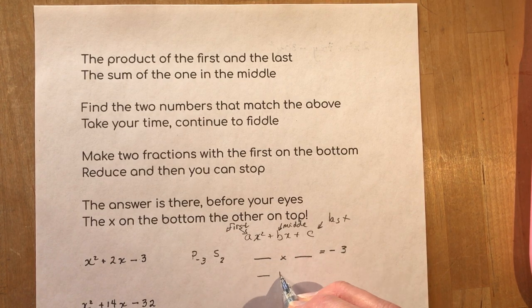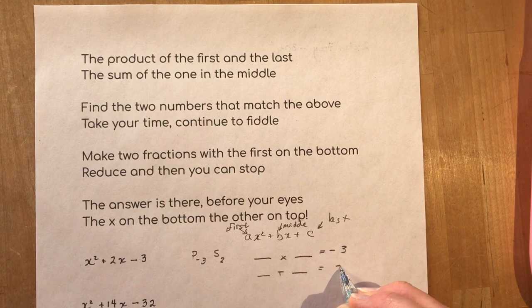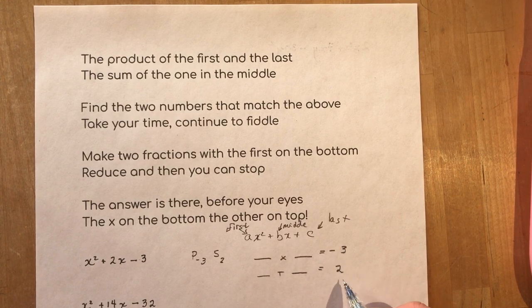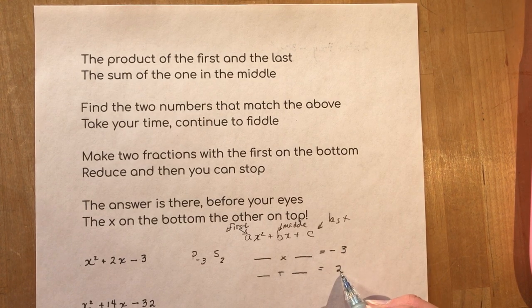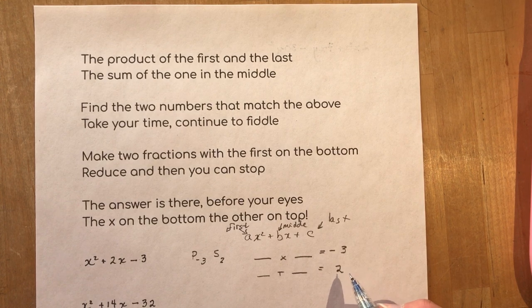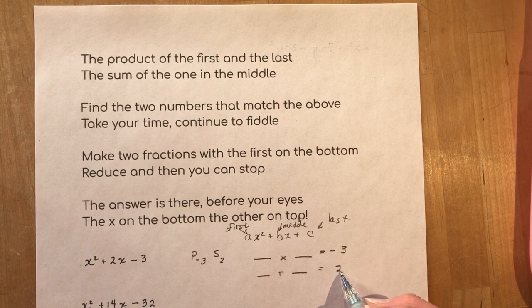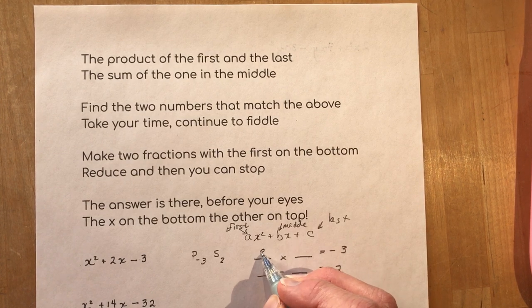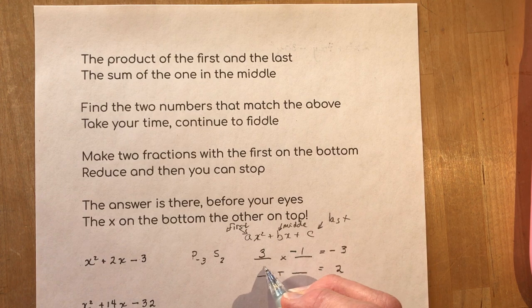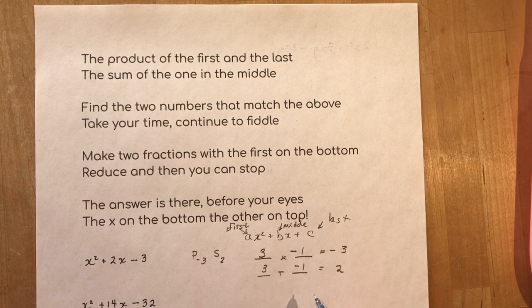Take the time to write this out because sometimes you get fooled. What multiplies to negative three and adds to positive two. So one of the numbers is positive. One of the numbers is negative. And because we sum to a positive number that means the bigger number has to be positive. Three and minus one.